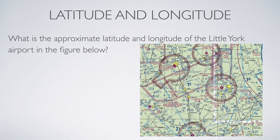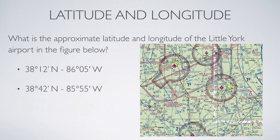Here's a relatively zoomed out picture, and here are the question answers. Just so it's clear, the Little York Airport is the R in the circle right there.